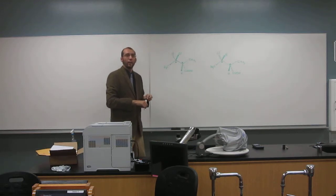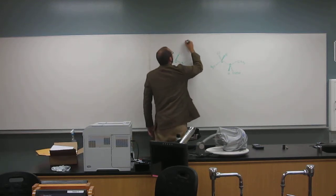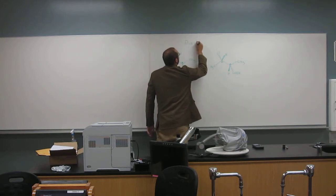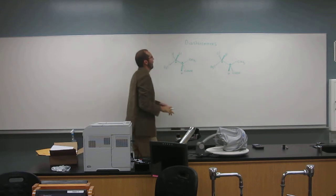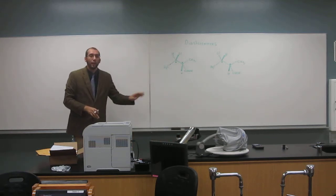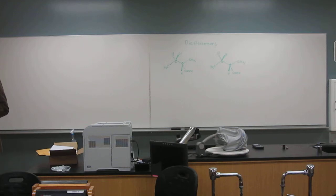Diastereomer. What you find is if they were both opposite, then they would be called an enantiomer. And an enantiomer, of course, is a non-superimposable mirror image. Any questions on that one?